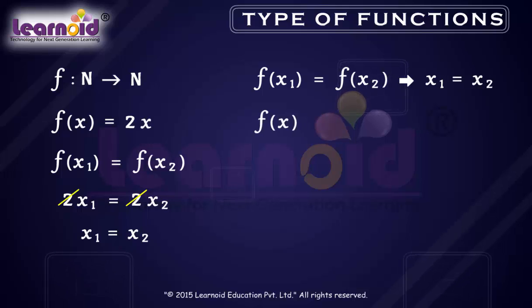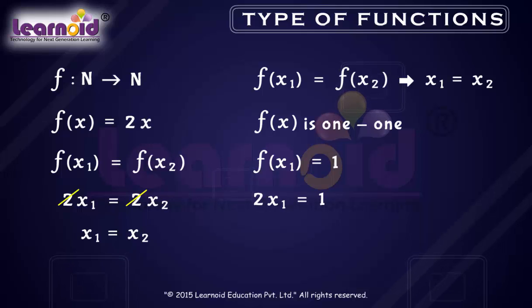Therefore, f(x) is one-to-one. Now for f(x1) = 1, we get 2x1 = 1, so x1 = 1/2, which is not a natural number. Hence, f is not onto.